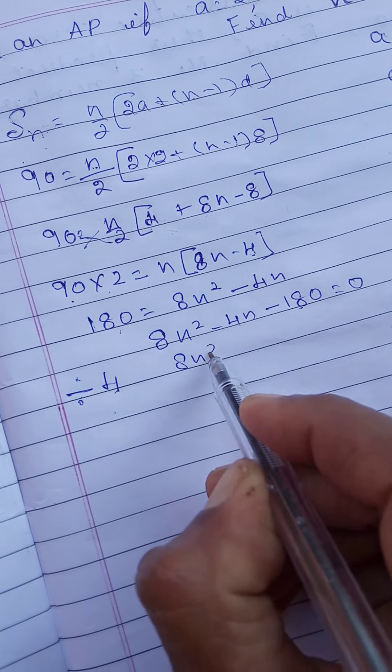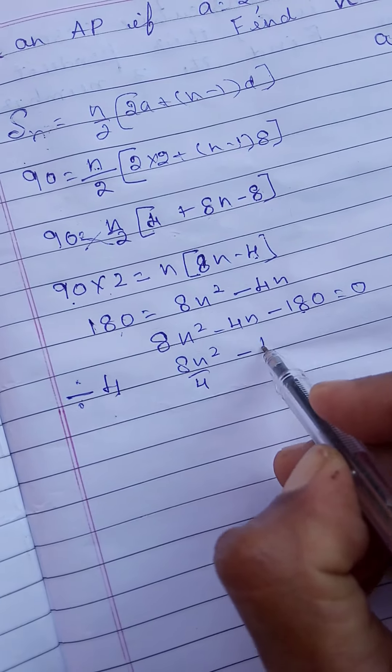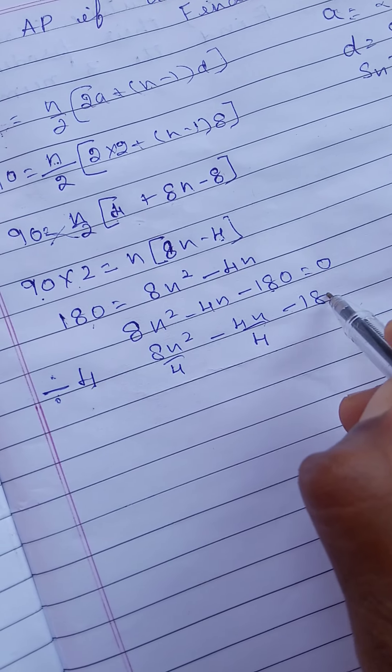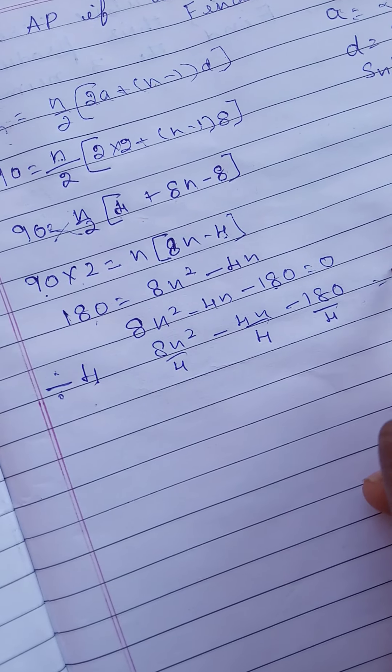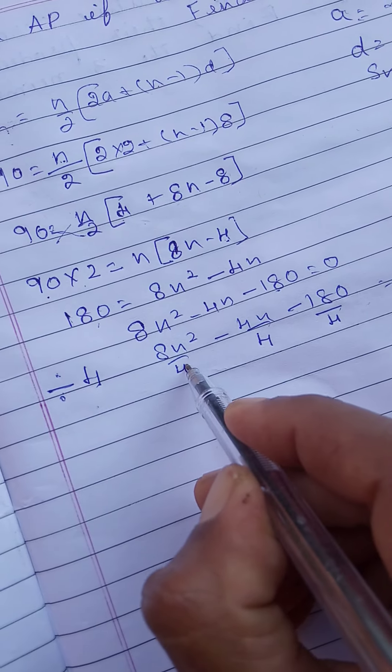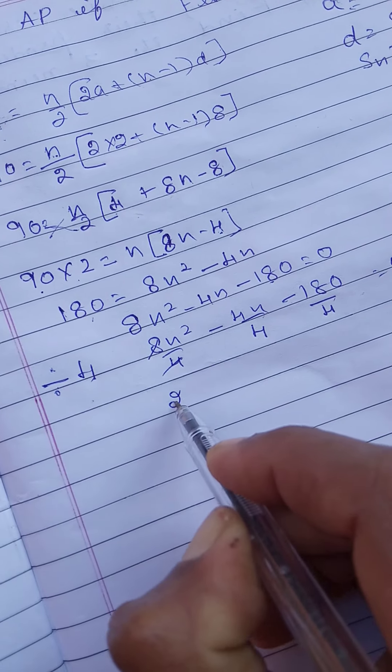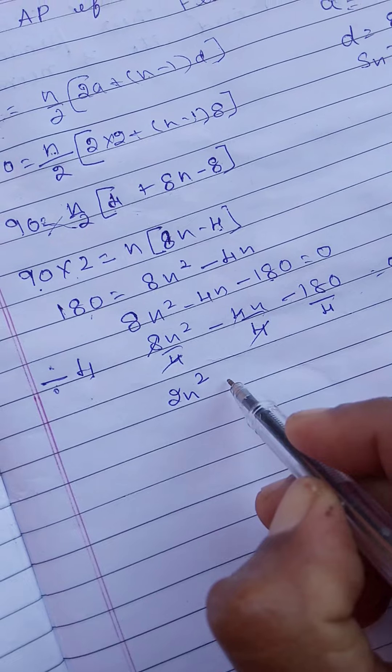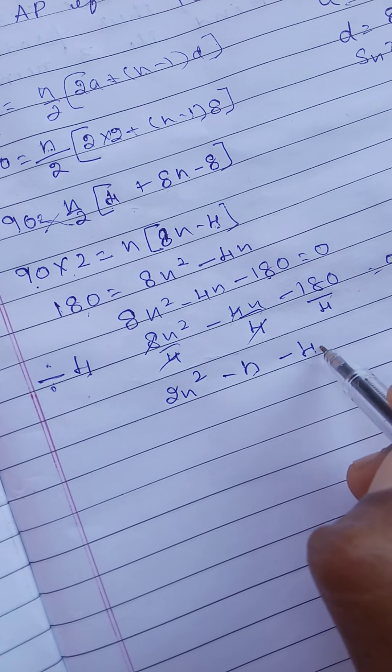Then we should simplify the quadratic equation by dividing by 4. Means 8n square by 4 minus 4n by 4 minus 180 by 4 is equal to 0. That means 2n square minus n minus 45.